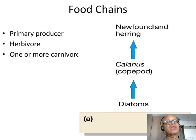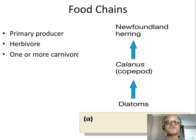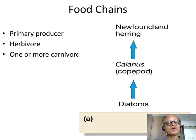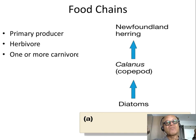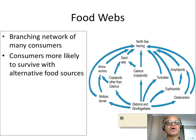If herring is caught in large numbers for fish oil or omega-3 production, you reduce the grazing pressure on the copepod — the predator of the copepod is disappearing. So the copepod population increases because there aren't as many herring eating them, and they begin to graze more and more on the primary production. You can perturb a simple food chain very easily.